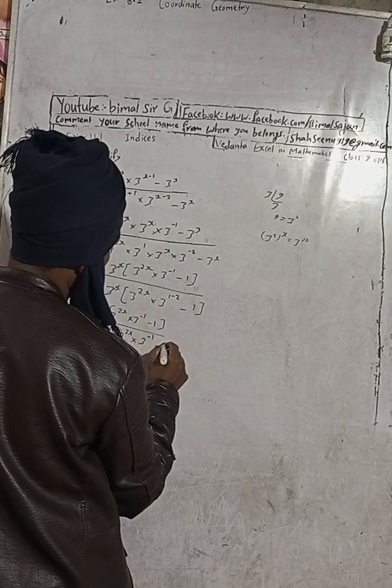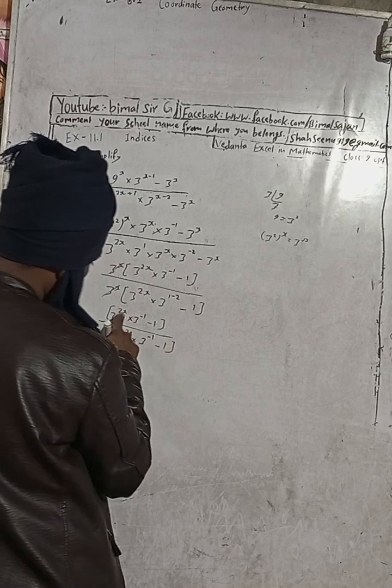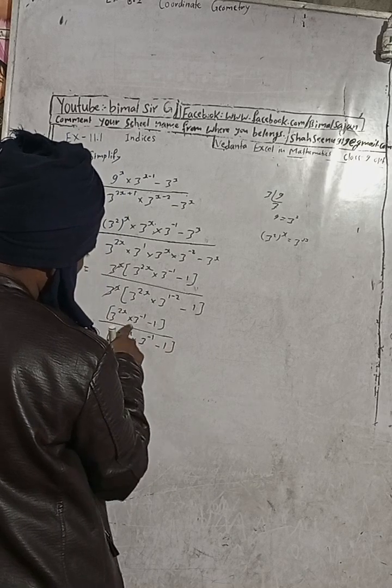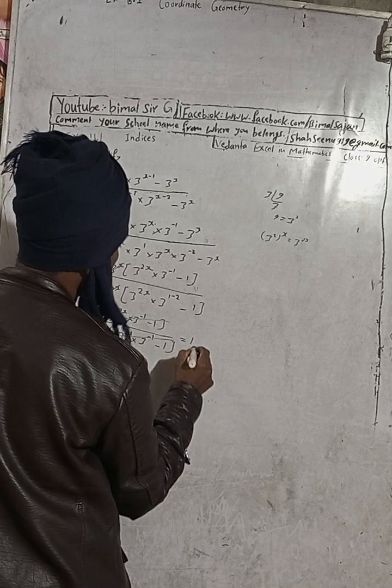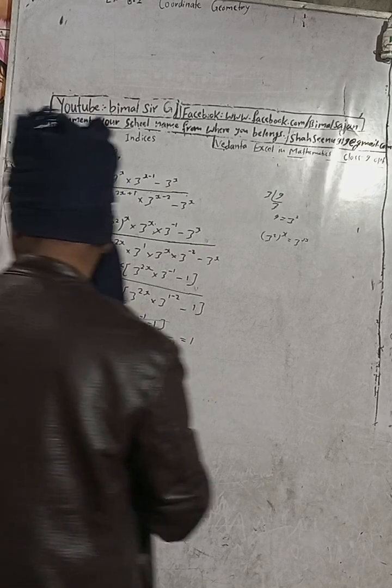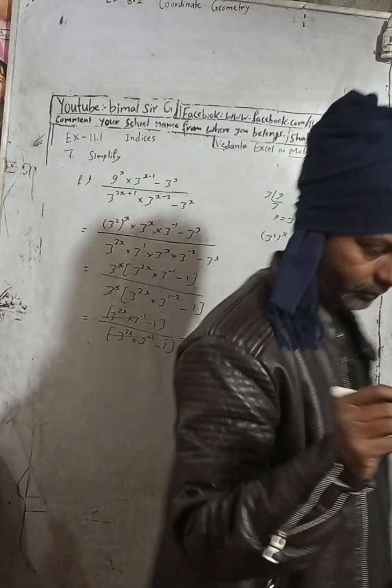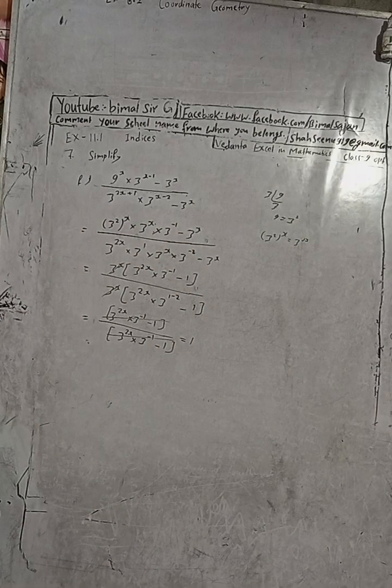So you can see same, same here. 3 to the power 2x into 3 to the power minus 1, same. So here you can see that this is equal to 1.